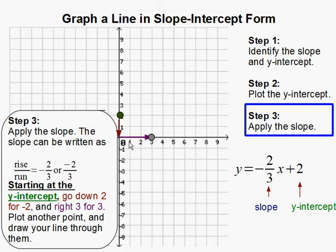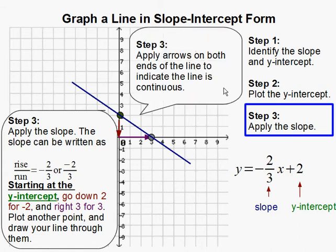Now that we have 2 points, we can draw our line through them. Also, we should apply arrows on both ends of the line to indicate the line is continuous.